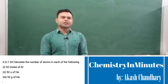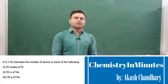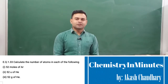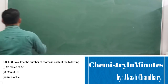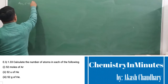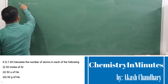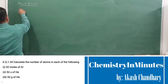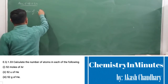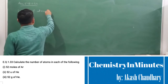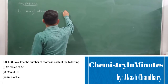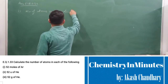To calculate the number of atoms, we are given masses of elements or moles of helium. Let's write the answer to the question. Answer to exercise question 1.33. First part: number of atoms in 52 moles of argon.